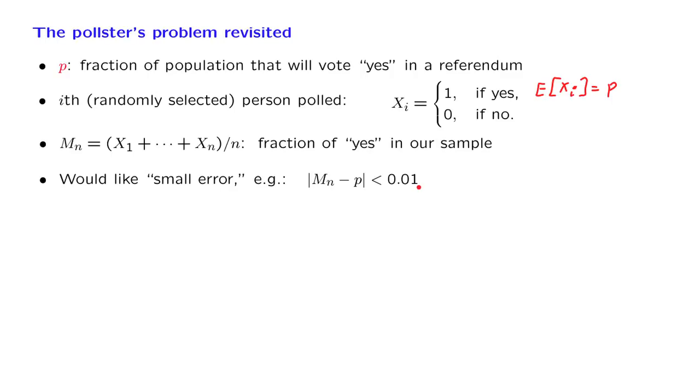Let's say less than 1 percentage point. There's no way of guaranteeing that this spec will be met with certainty, unless we sample almost everyone in the population. But what we can do instead is ask that these specifications are violated with only a small probability. We look at the probability that our estimation error is larger than what we want, and we would like this probability to be small. One possible question is what the value of n should be in order to meet these specs. But first we need a way of approximating this probability, and we will do that using the central limit theorem.